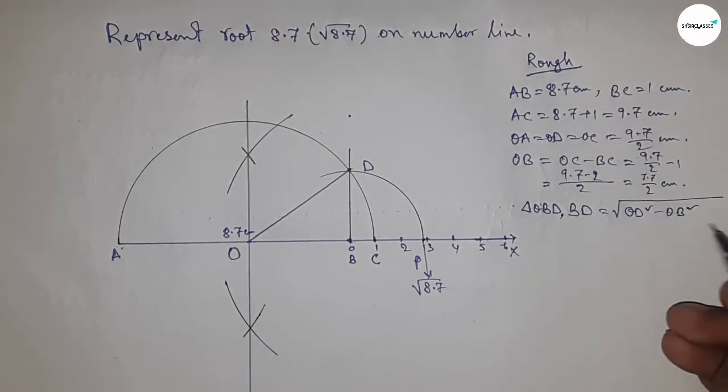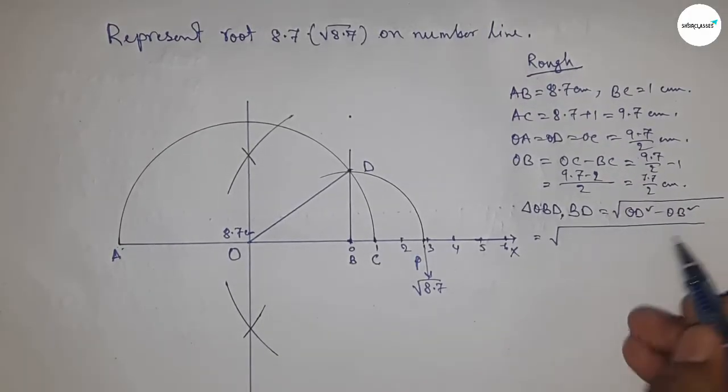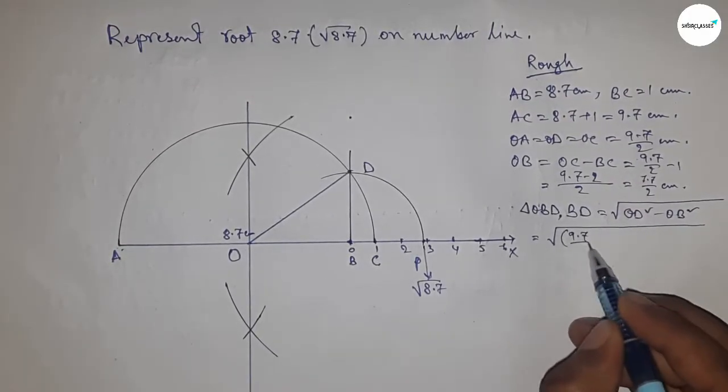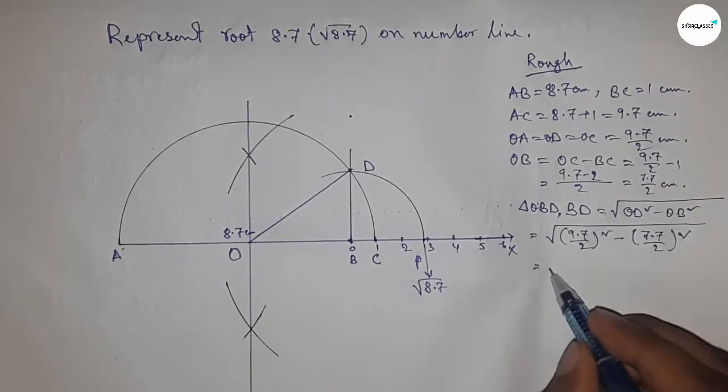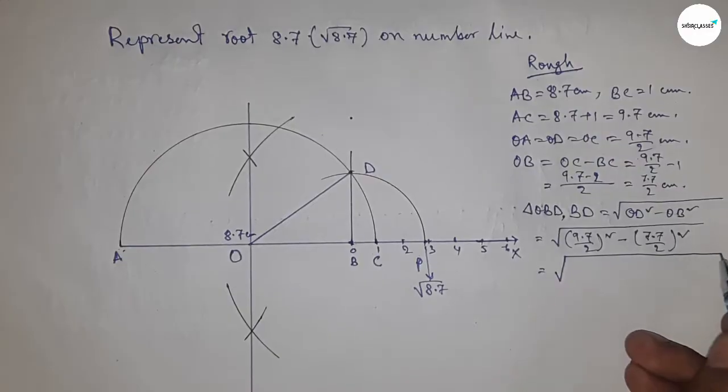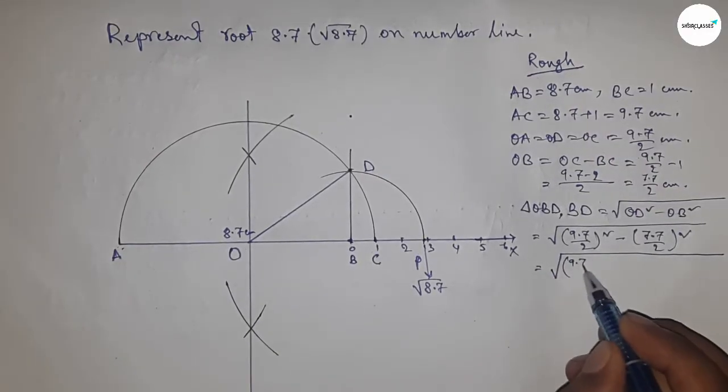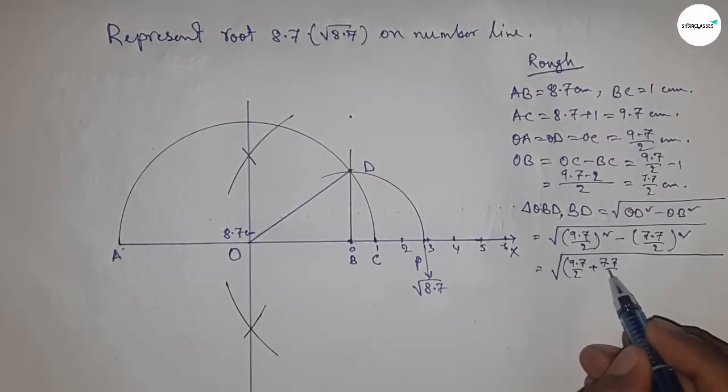Now put the values of OD and OB. Next, I'm going to use the formula: a squared minus b squared equals (a plus b)(a minus b), applying the formula here.